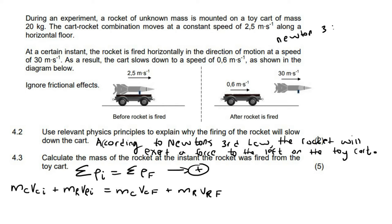Okay. So we know that during an experiment, a rocket of unknown mass is on a toy cart. Okay. So we know that the cart is 20. We know that its initial velocity is 2.5. We know that the rockets mass is unknown. Its velocity originally would be 2.5.